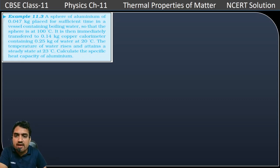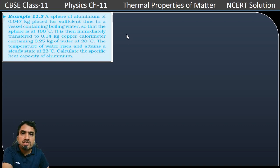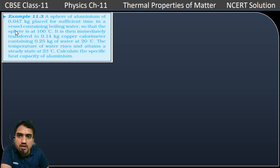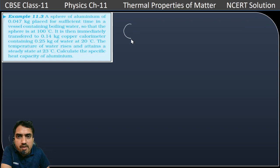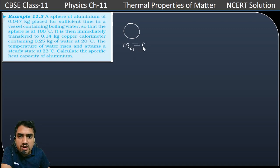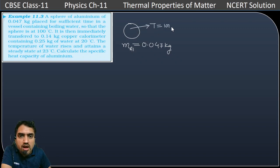Hello my dear students. Now question number 11.3, which is related to specific heat. There is a sphere of aluminum of 0.047 kg placed in sufficient time in a vessel containing boiling water so that the sphere is at 100 degree Celsius. The mass of this sphere is equal to 0.047 kg, and it is in boiling water at 100 degree Celsius.